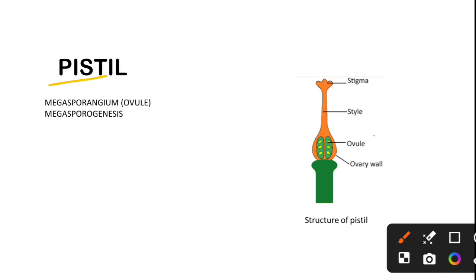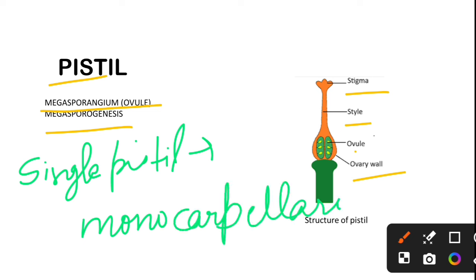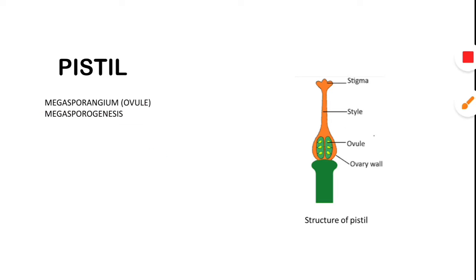Now we will see the structure of the pistil. The pistil parts are stigma, style, ovary, and ovules. The ovule is called the megasporangium. If we have only one pistil, we will call it the monocarpellary condition.